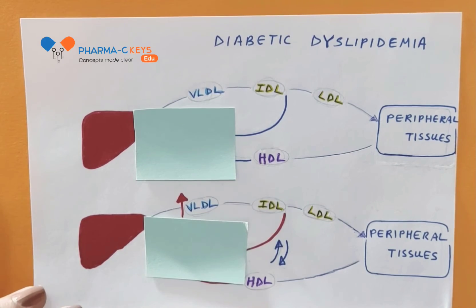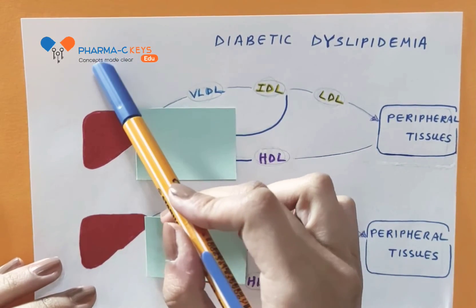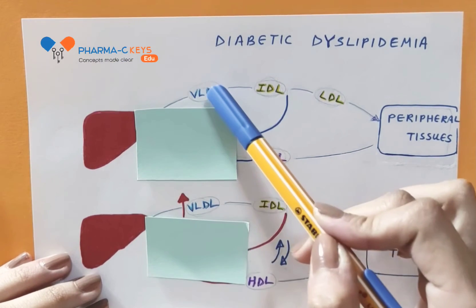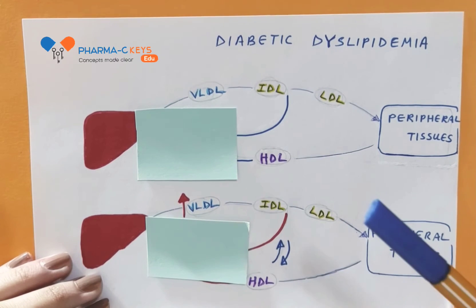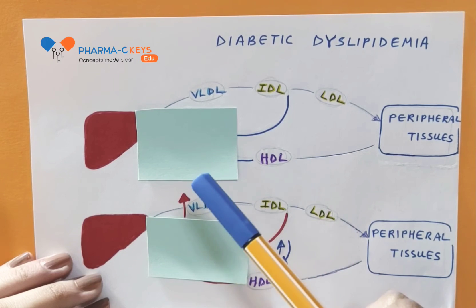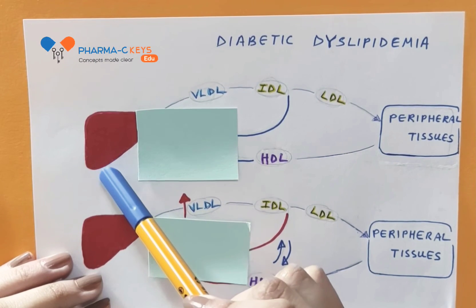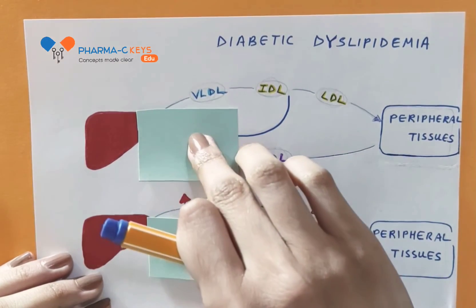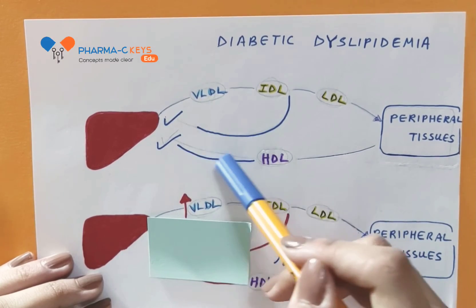Okay, so starting with the normal pathway. Normally, there is a normal amount of blood glucose and free fatty acids, which result in the normal production of VLDL. Also, normal amounts of insulin result in the normal regulation of several processes, including the number of LDL receptors on the liver surface, which leads to the normal clearance of triglyceride-rich lipoproteins.